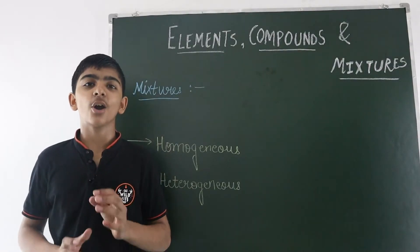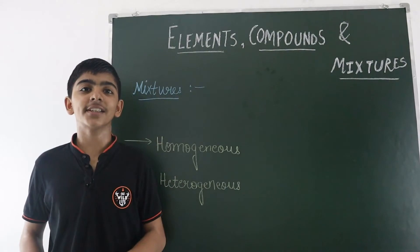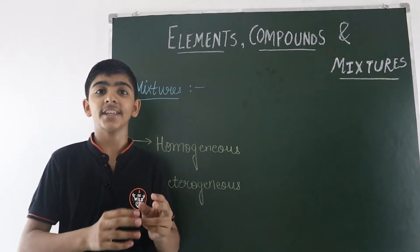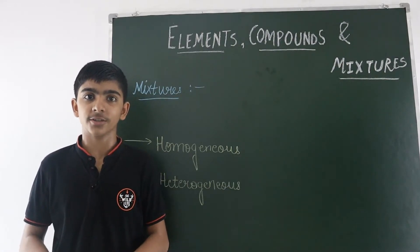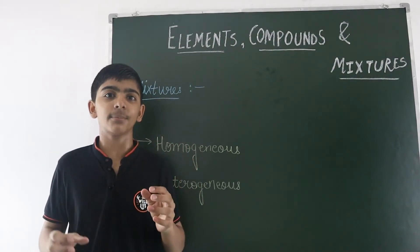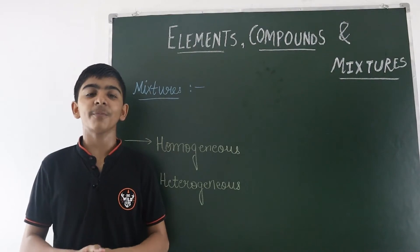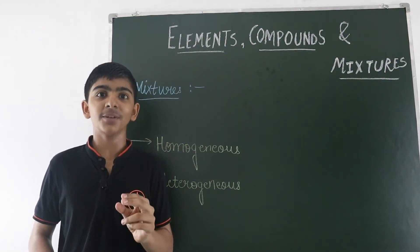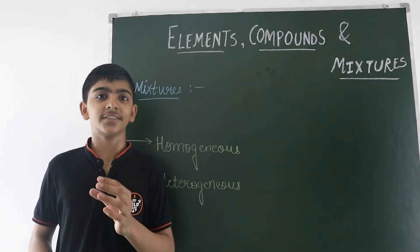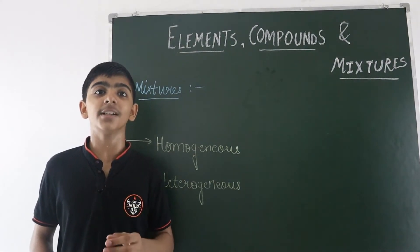Now we will discuss mixtures. A mixture is a combination formed by adding two or more substances in any proportion — the ratio is not fixed; it can be in any ratio. Examples of mixtures: air is a mixture containing nitrogen, oxygen, water vapor, etc. Gunpowder is a mixture of nitre, sulfur and charcoal.